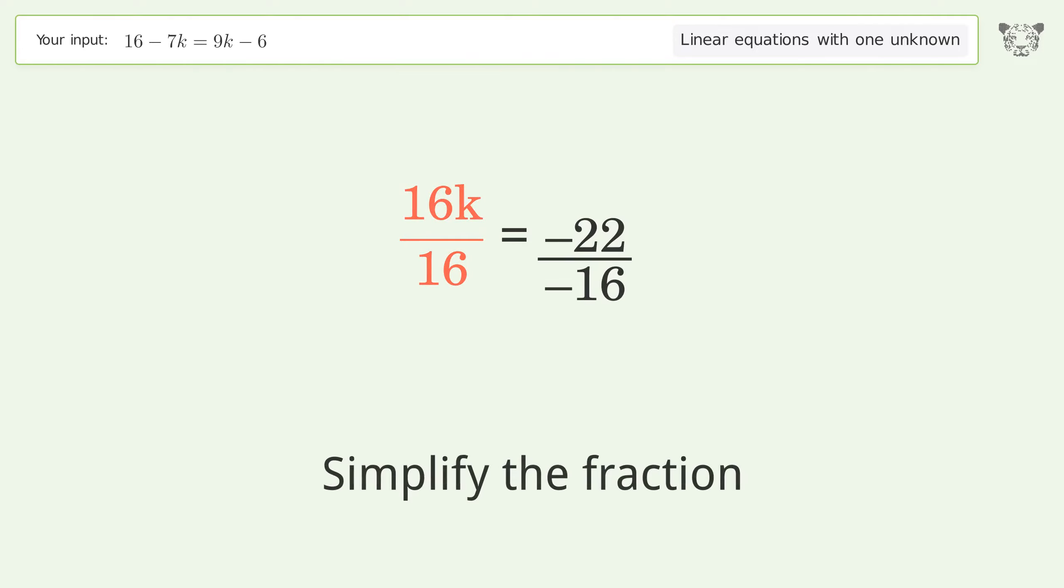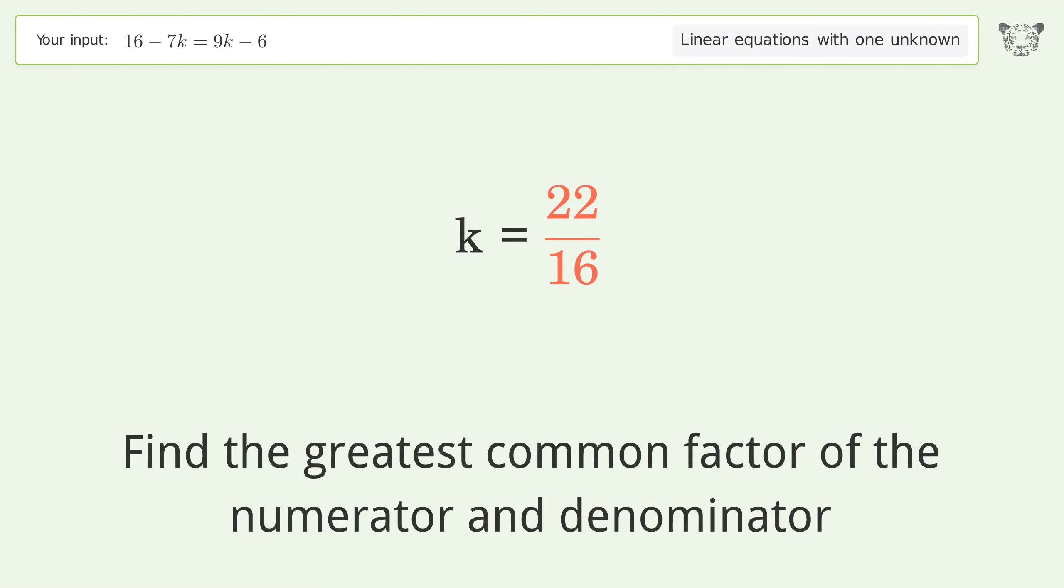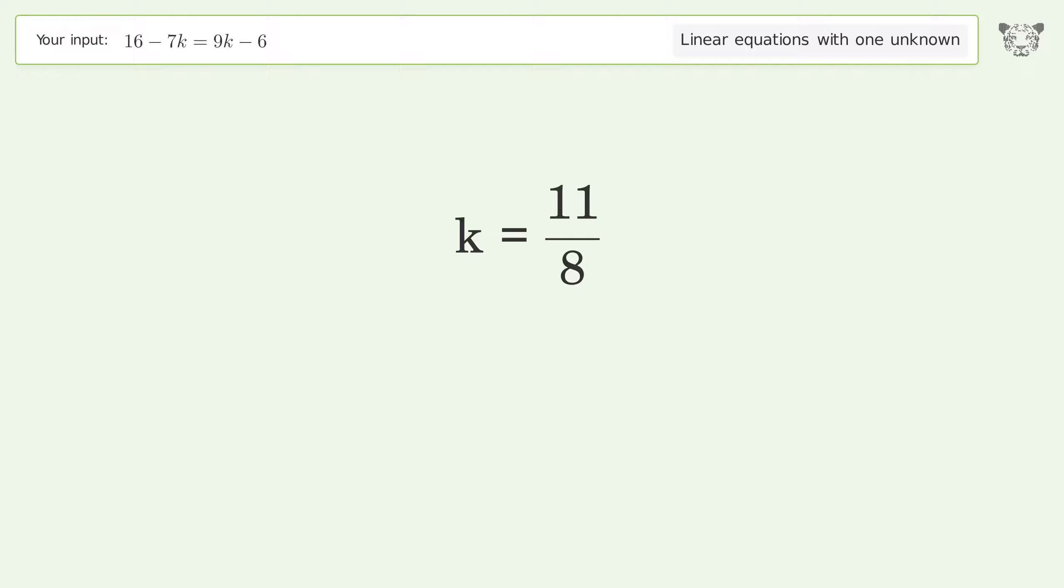Simplify the fraction. Cancel out the negatives. Find the greatest common factor of the numerator and denominator. Factor out and cancel the greatest common factor. And so the final result is k equals 11 over 8.